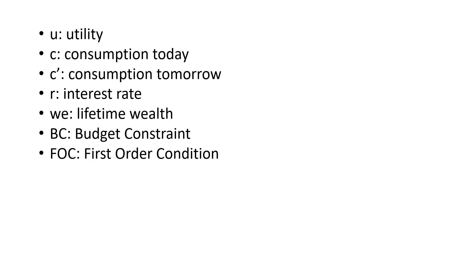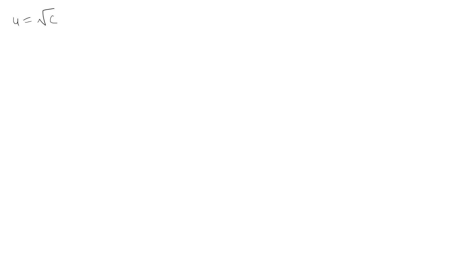Here are some notations we need to be familiar with at the outset before we begin. Let's presume we are given a specific utility function where u is equal to the square root of c. We know that the objective of the consumer — that is the goal of the consumer — is to maximize lifetime utility.